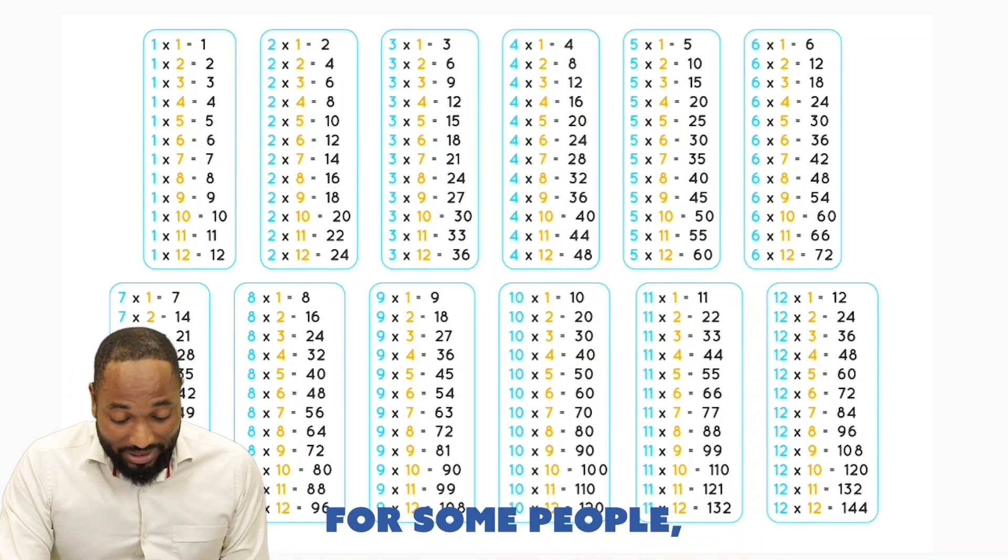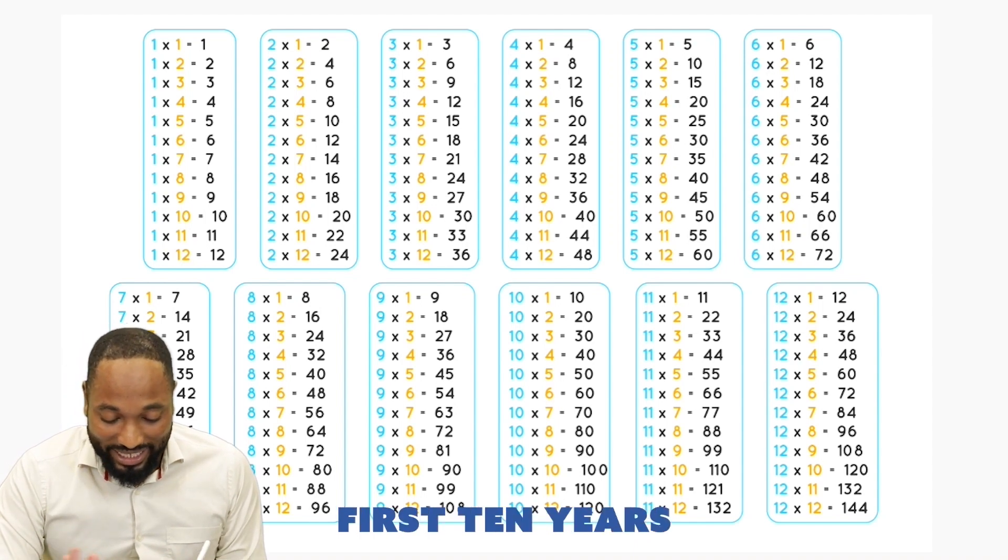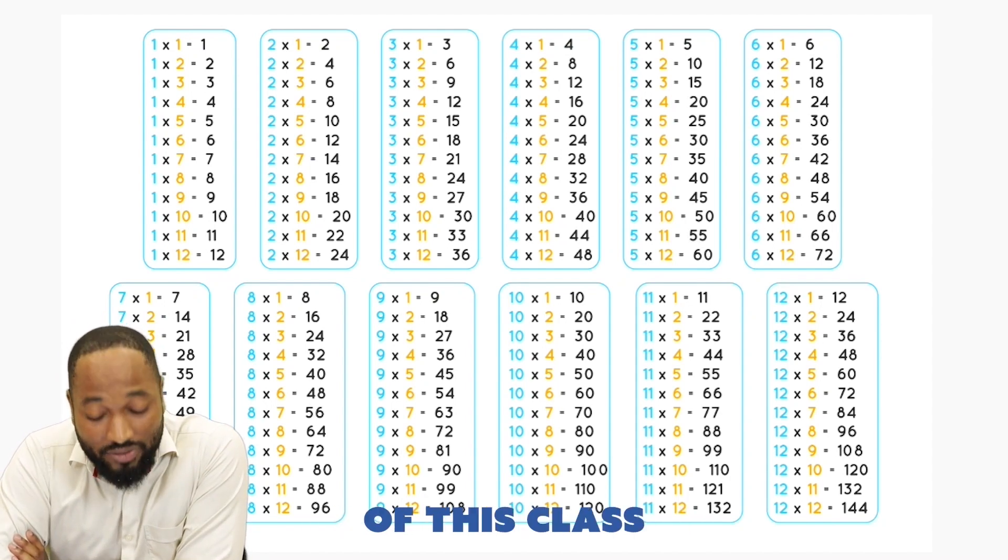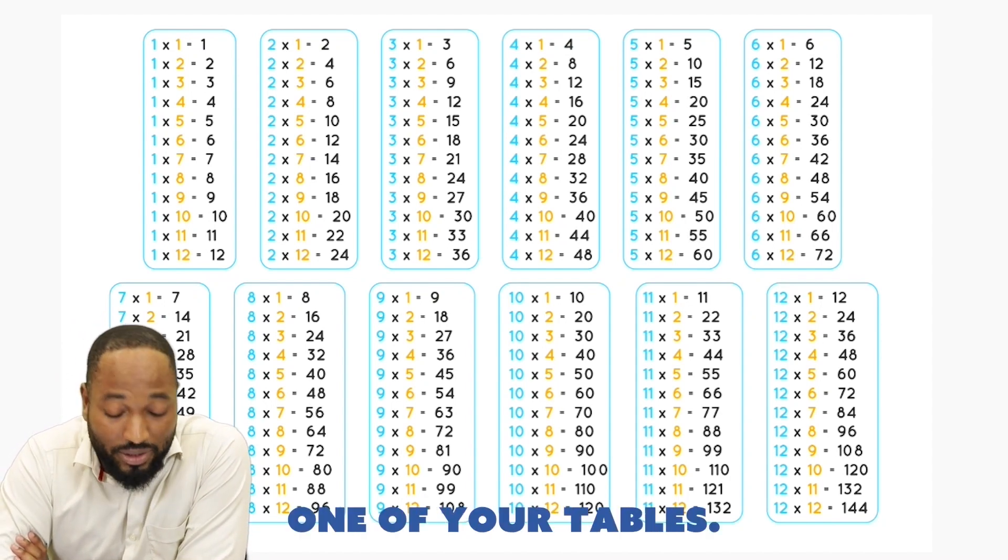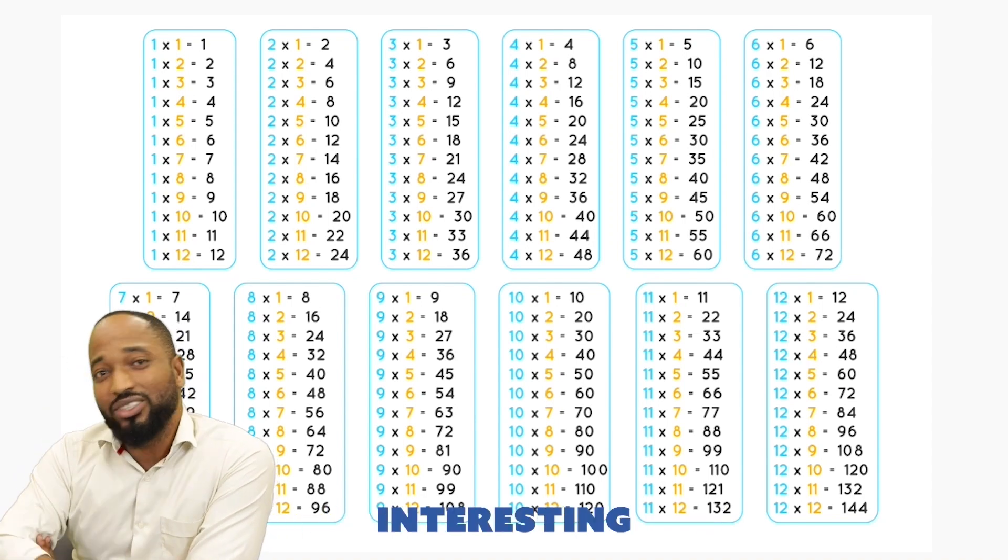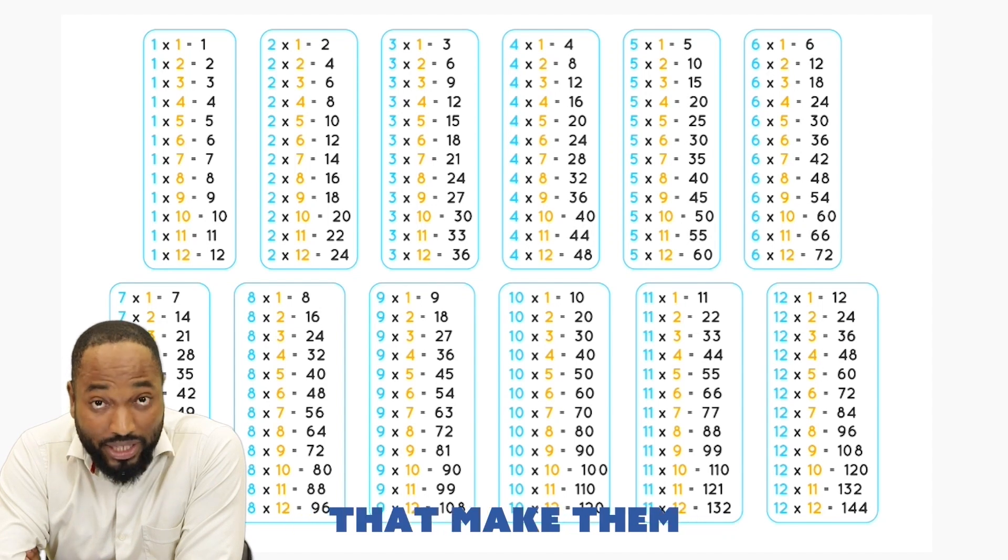For some people, this is their arch nemesis, their enemy for the first 10 years of their life. Don't let this be your enemy. I'm here to encourage you today for the next piece of this class to learn every single one of your tables: 2, 3, 4, 5, 6, 7, 8, 9, 10. There are some very interesting patterns in the tables.